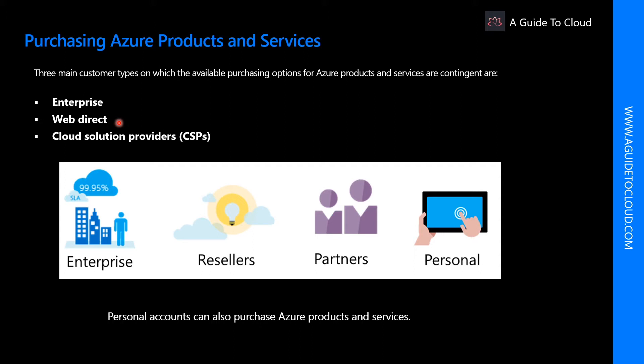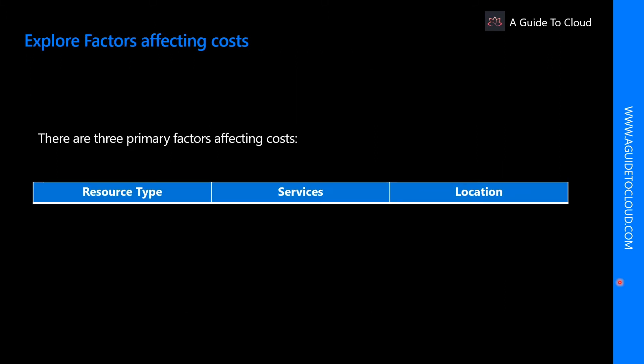Web direct customers pay public prices for Azure services, and their monthly billing and payments occur through the Azure website. A cloud solution provider, or CSP, typically are Microsoft partner companies that a customer hires to build solutions on top of Azure. The payment and billing for Azure usage occurs through the customer's CSP.